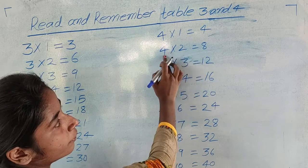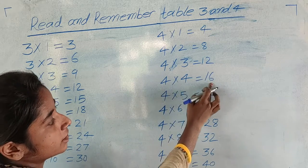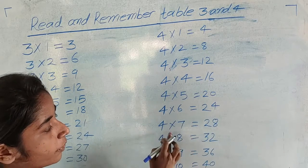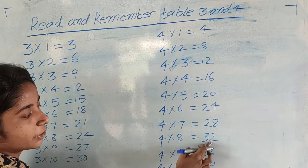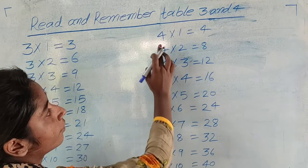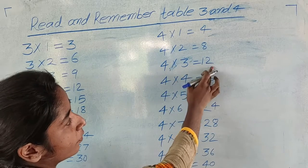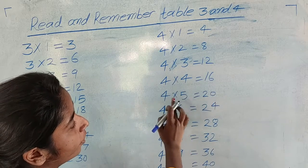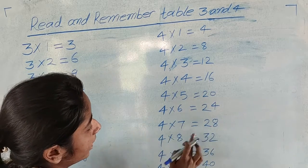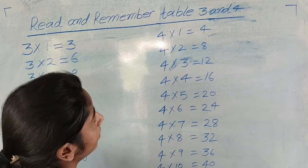4 × 1 = 4, 4 × 2 = 8, 4 × 3 = 12, 4 × 4 = 16, 4 × 5 = 20, 4 × 6 = 24, 4 × 7 = 28, 4 × 8 = 32, 4 × 9 = 36, 4 × 10 = 40.